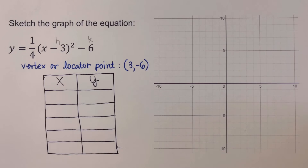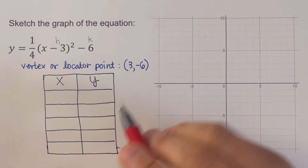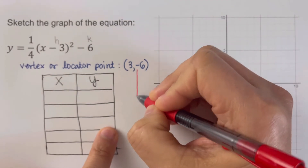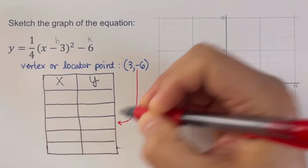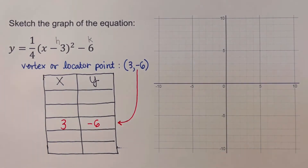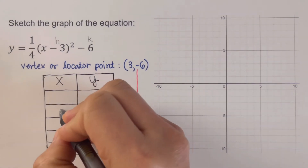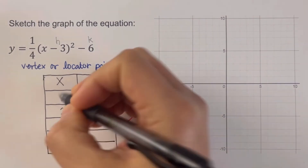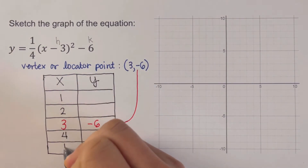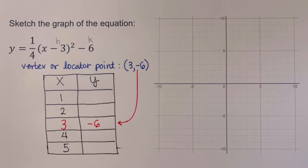The second step is to create and complete the table of values. We place the locator point (3, −6) in the middle of the table. From 3, we go left to 2 and 1, and right to 4 and 5. Then we determine the y-values for each x, and the work is shown on the side.